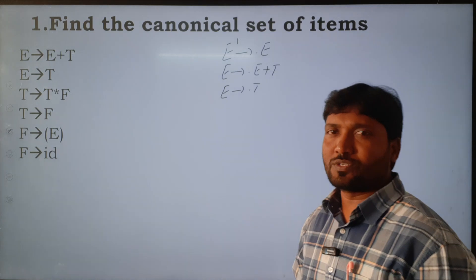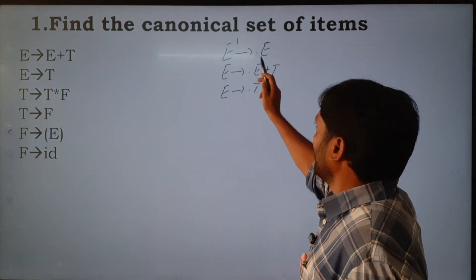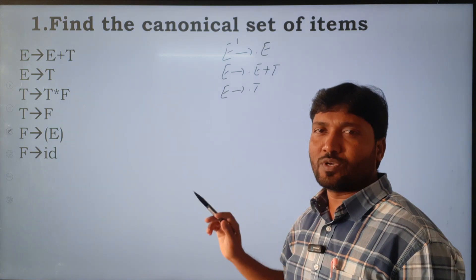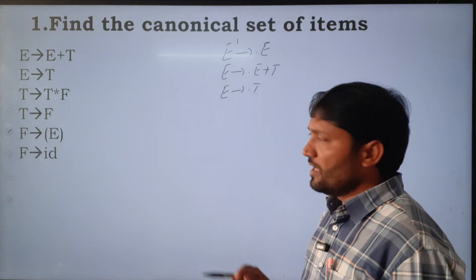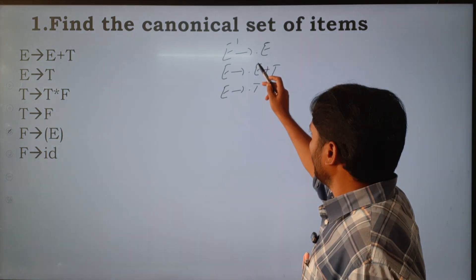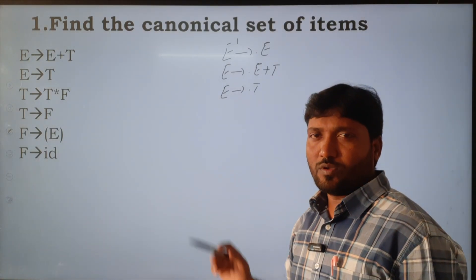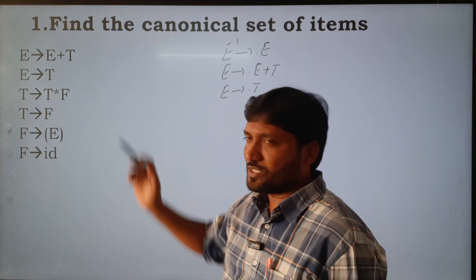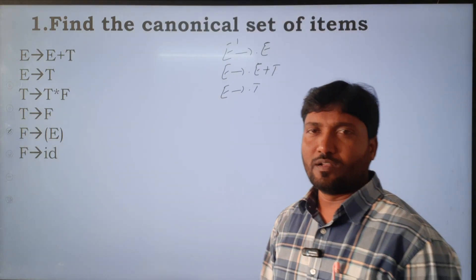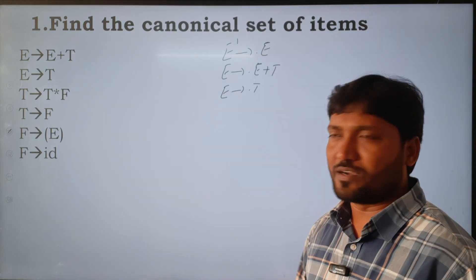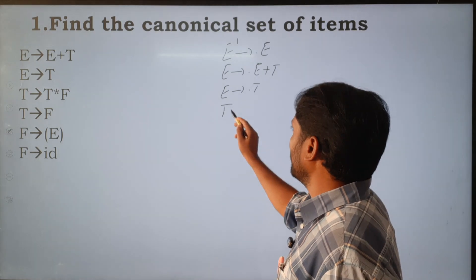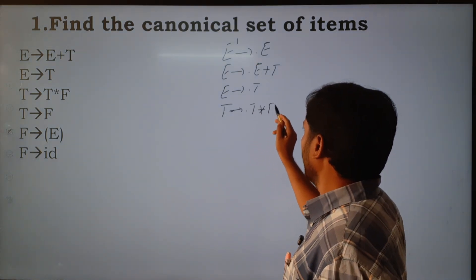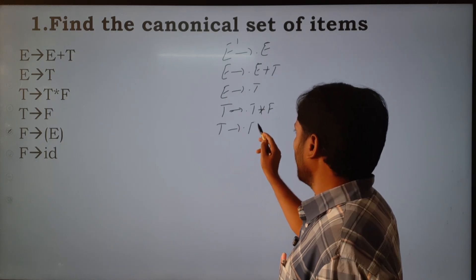Why we add these two productions? Because after the dot there is capital E, and E has two productions. We add these two productions by placing the dot symbol at the start. E is over, and next there is capital T. Capital T is a non-terminal symbol with two productions, so we add: T derives .T*F and T derives .F.